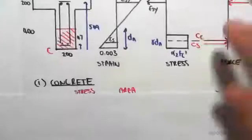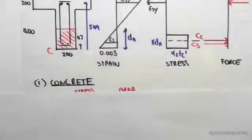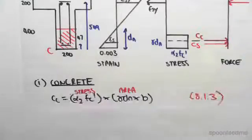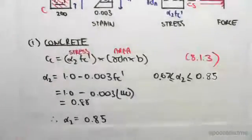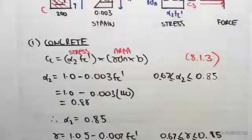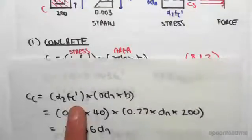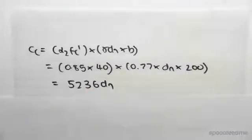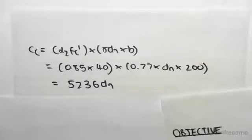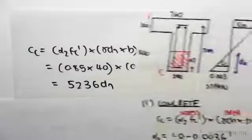So for the concrete it's the exact same case as before, that's why I'm going to skip through it. We do the compression in the concrete, we find alpha 2, we find gamma, and we can find that the compression in the concrete is this formula over here and we find it to be 5236 dn. So including that bottom area of steel is not going to affect the compression in the concrete at all.